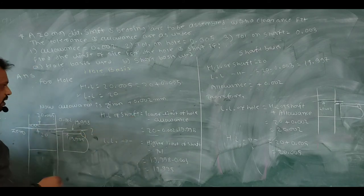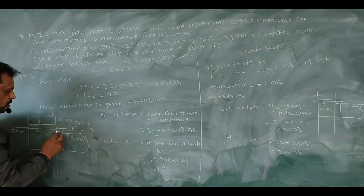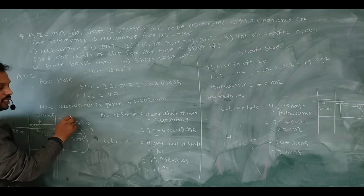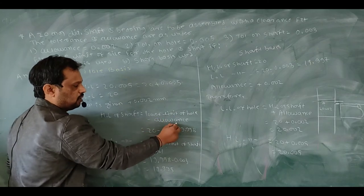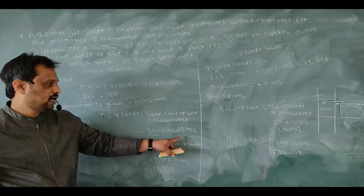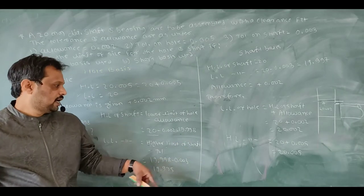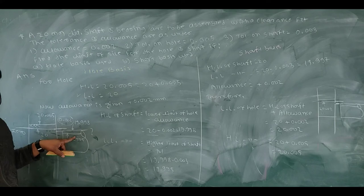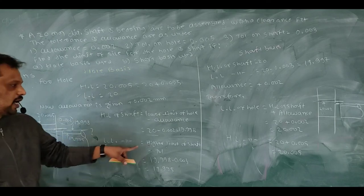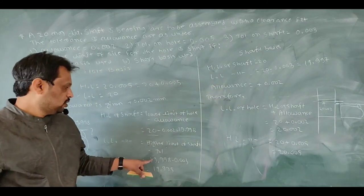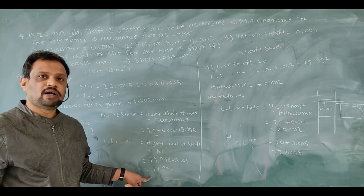For calculating the higher limit of shaft: hole lower limit minus allowance = 20 − 0.002 = 19.998mm. For calculating the lower limit of shaft: higher limit of shaft minus tolerance on shaft = 19.998 − 0.003. I have written the calculation over here and calculated the answer.